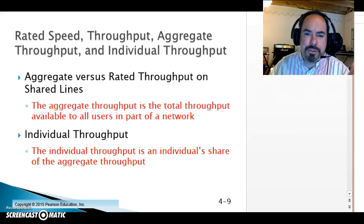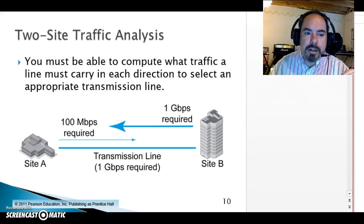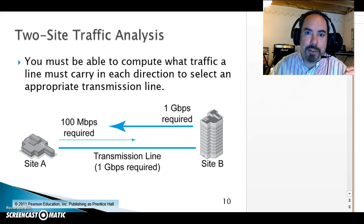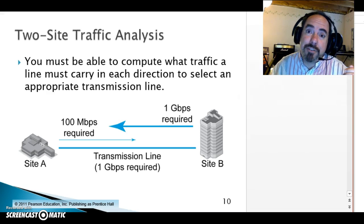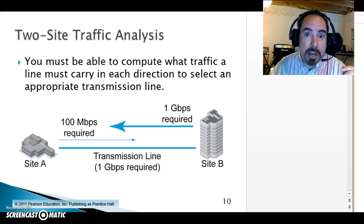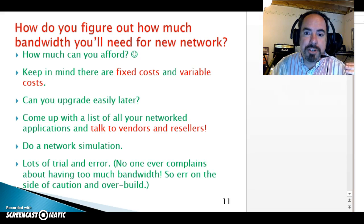A topic in the book regarding aggregate throughput versus individual throughput is a fair point, but a pretty obvious one. The larger problem is figuring out how much bandwidth is enough — how much bandwidth you need to provision on the LAN and WAN side. It's a tough question. Nobody's ever complained about having too much bandwidth, but it is possible to over-provision.